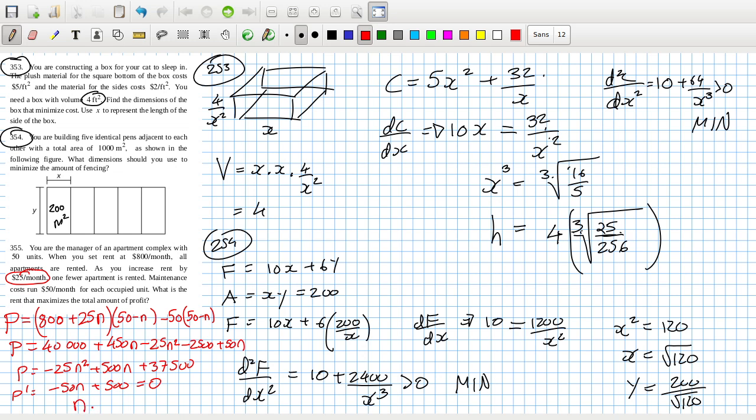So that means N has to equal 10. So it's 10 times 25, which is 250. So 250 added onto 800 is $1050 a month. And the second derivative here is obviously negative, which makes it the maximum.